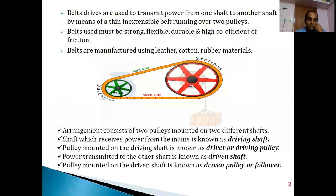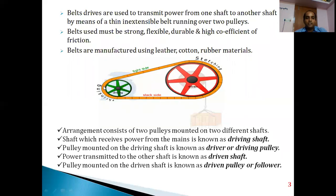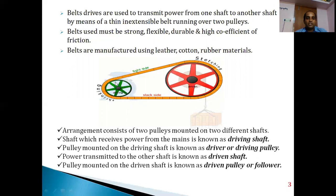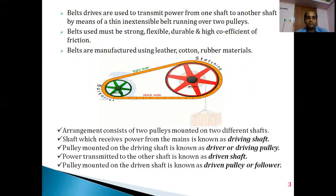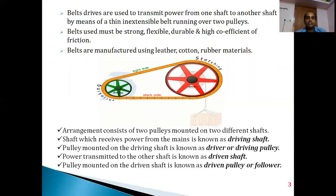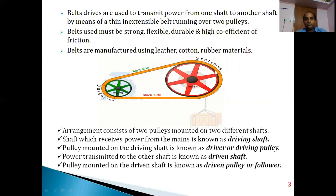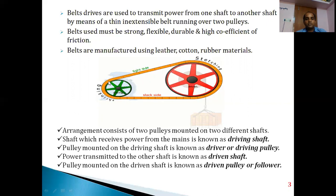Now, what are belt drives? Observing the picture carefully, there is one pulley receiving energy from the source — we call this the driver pulley — which pulls the belt and transfers it to the other side, called the driven pulley. Belt drives use belts made of leather, cotton, or fabric materials that are strong, flexible, durable, and have a coefficient of friction where the belt contacts the pulley surfaces.